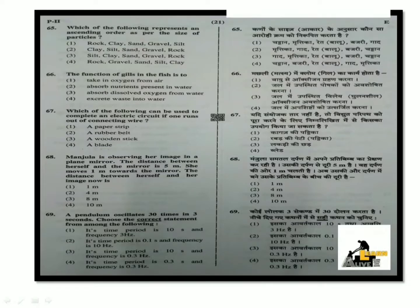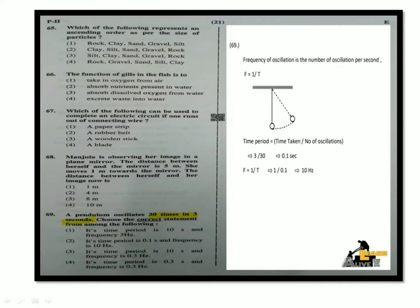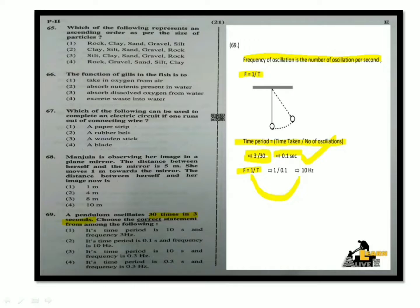Next question: A pendulum oscillates 30 times in 3 seconds. Choose the correct statement. The time period equals time taken divided by number of oscillations, so time period = 3/30 = 0.1 seconds. Frequency F = 1/T = 1/0.1 = 10 Hz. So the time period is 0.1 seconds and the frequency is 10 hertz.